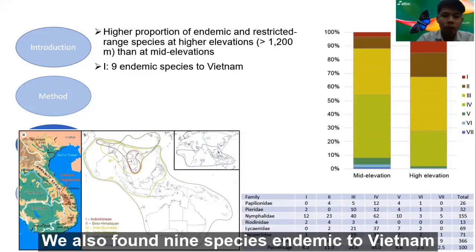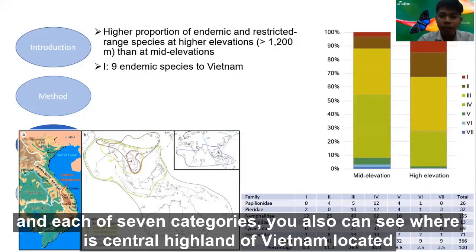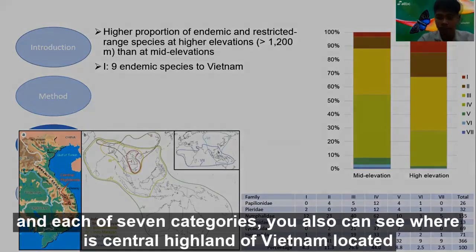We also found 9 species endemic to Vietnam, spanning several biogeographic categories. You can also see where the Central Highlands of Vietnam is located on the map.